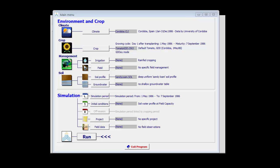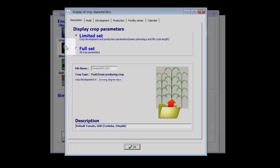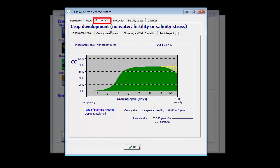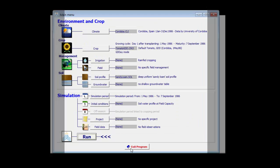In this example, we look at the development of a tomato crop in Cordoba. The crop is not irrigated and was sown on the 1st of May on a sandy loam soil. In the crop file, we can look at the crop development: crop development with no water stress, no fertility stress, no salinity stress, so in the absence of any stress.